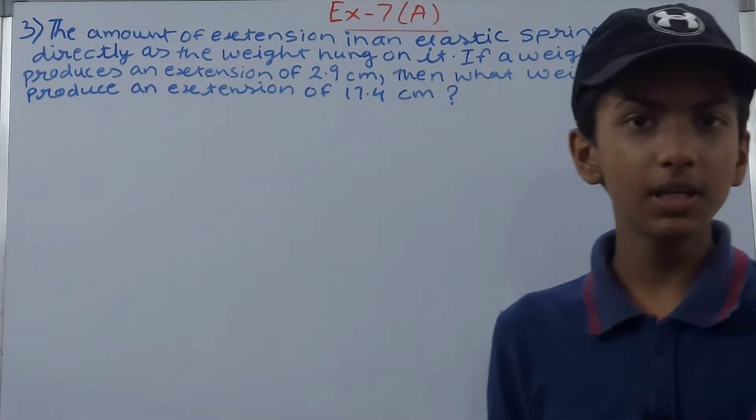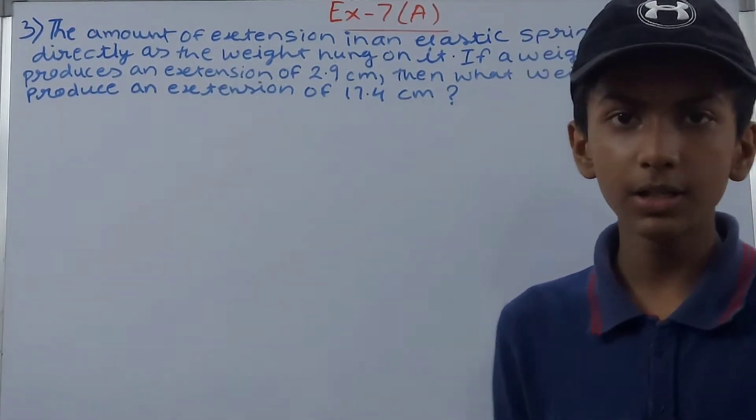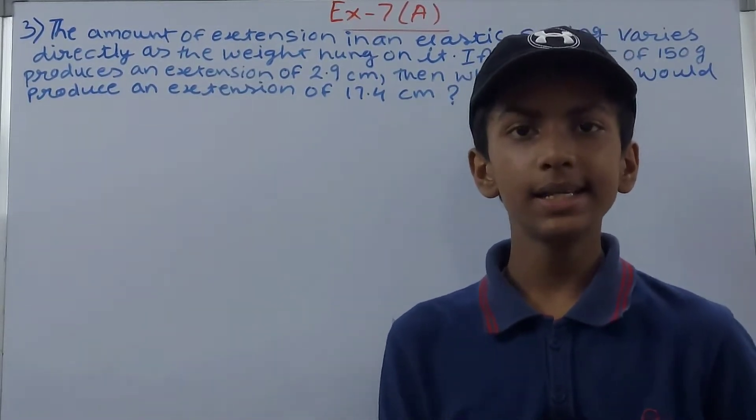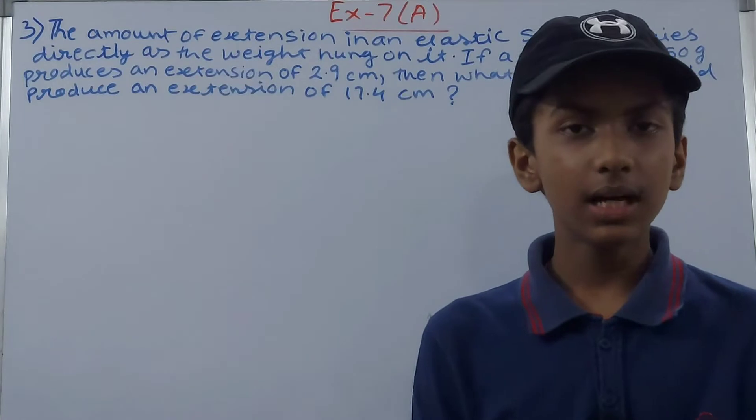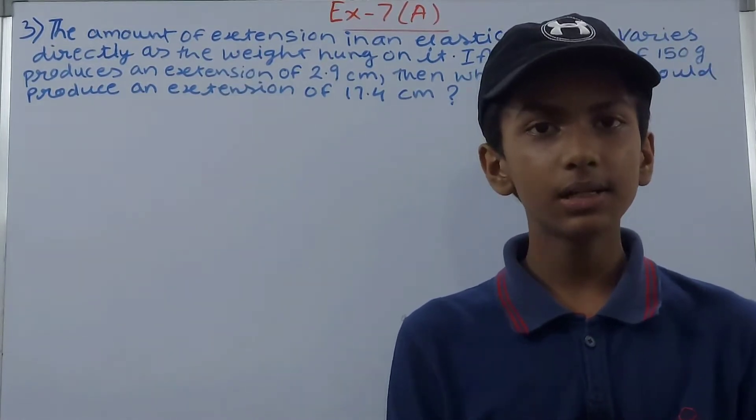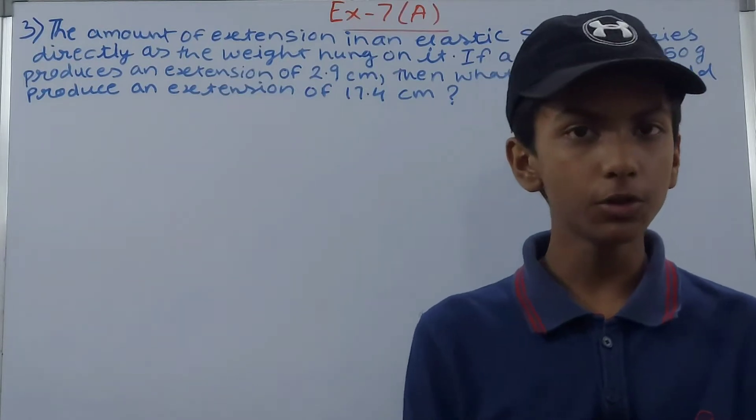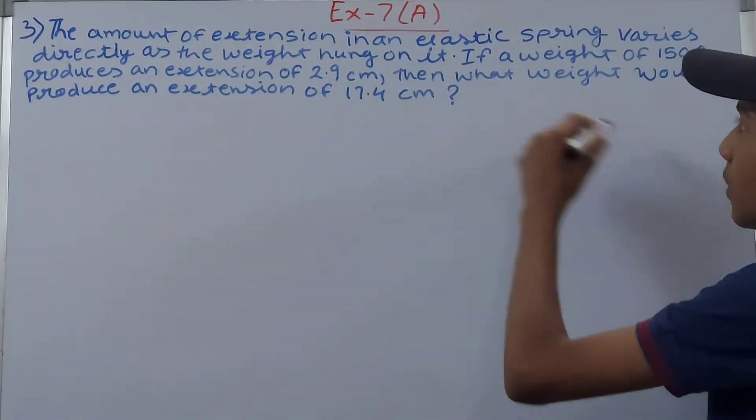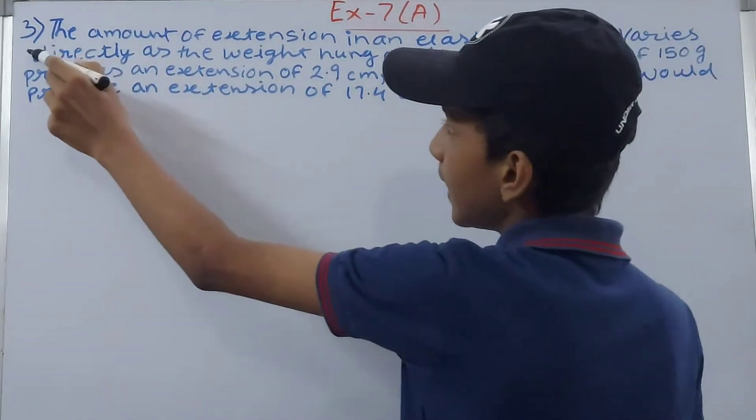If I put a weight of 150 grams attached to my spring balance, our spring will extend 2.9 centimeters. Now it is asking us how much weight do we need to extend our spring to 17.4 centimeters. Simply, it is already given in the question that it varies directly.